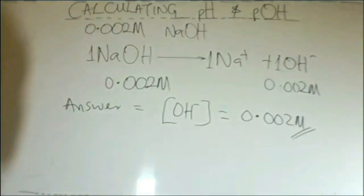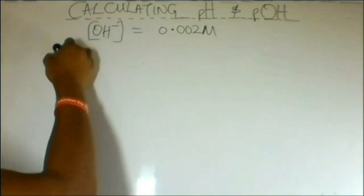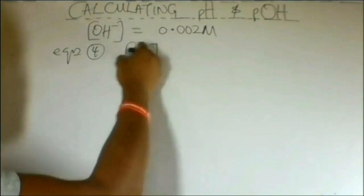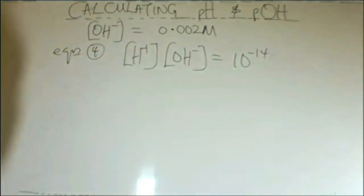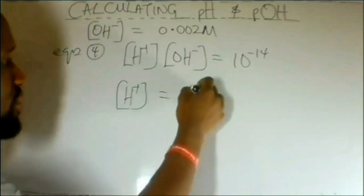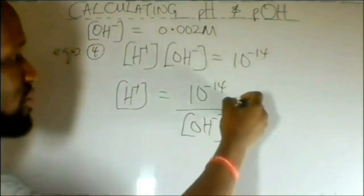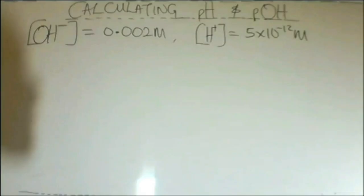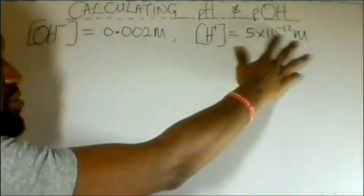We've answered one part of the question. Now, since OH⁻ is 0.002 molar, we use equation 4, which says H⁺ multiplied by OH⁻ equals 10 to the power of minus 14. Therefore, H⁺ equals 10 to the power of minus 14 divided by OH⁻, which is 0.002. This gives us H⁺ as 5 times 10 to the power of minus 12 molar.